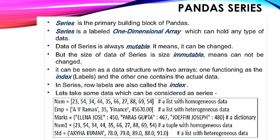The very first point about series is that it is stored in a one-dimensional array, that is a 1D array. This is also called a homogeneous series. Homogeneous series means only one type of data can be stored. This means if we are storing one value which is an integer, the rest of the values should also be integers. If the first value is a string, the rest of the values should also be strings.